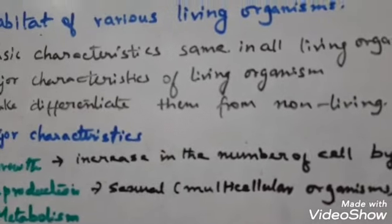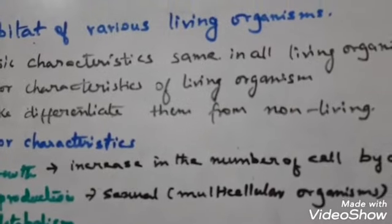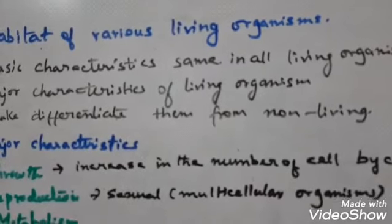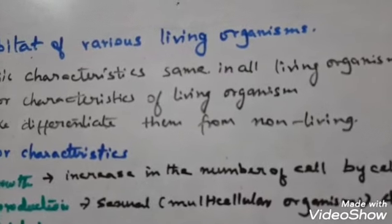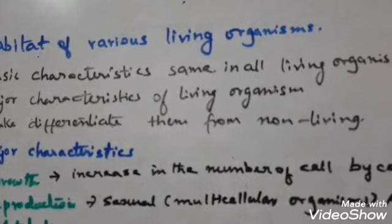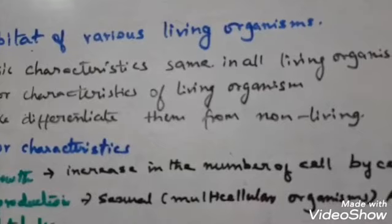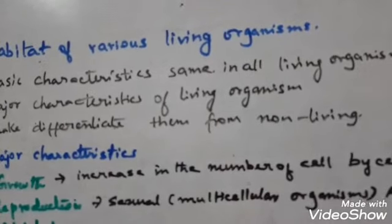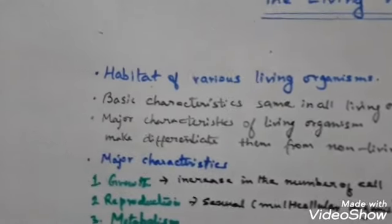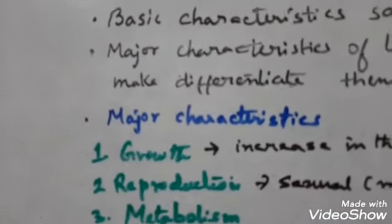Unicellular organisms like bacteria, algae, and Amoeba generally reproduce by increasing the number of cells through cell division. Here growth is synchronized with reproduction, so we can say that reproduction and growth are both synchronized and correlated.